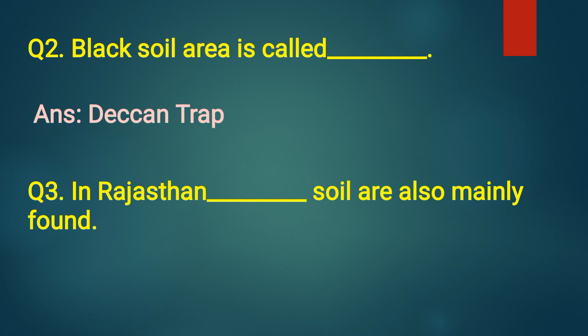Third question, in Rajasthan, dash soil are also mainly found. Answer, desert. In Rajasthan, desert soil are also mainly found.